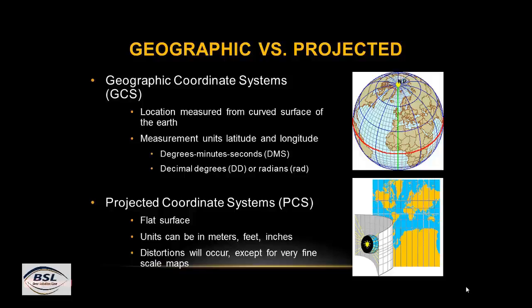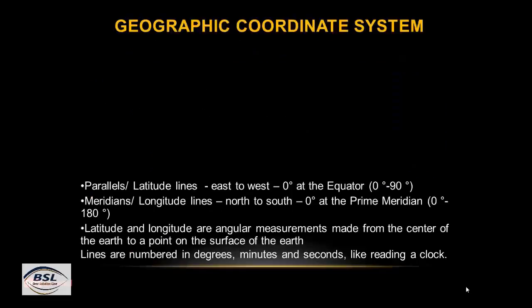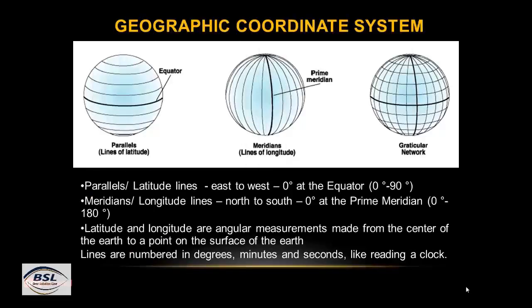Distortion will occur except for very fine scale maps. In the first figure, this is a globe showing latitude and longitude based on angular distances. In the second figure below there is a flat surface measured in meters, feet, and inches. In the geographic coordinate system, you can see three figures of a globe. The first figure shows parallel lines running east to west, which are called lines of latitude.